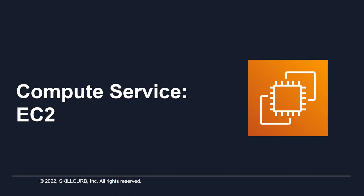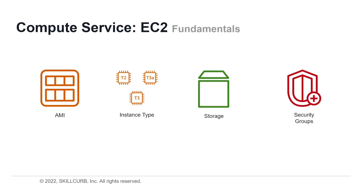The compute service EC2 has four core competencies you'll be dealing with. The first is the Amazon Machine Image, or AMI, that your instance is going to be based on. Then comes the type of instance you want to set up, the storage you want to give your instance, and lastly, the way you want to handle accessibility via security groups. We're going to take a look at all of these.